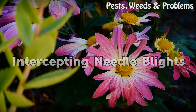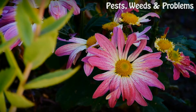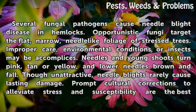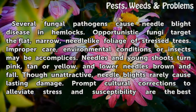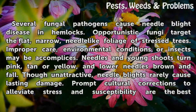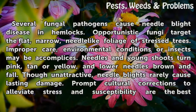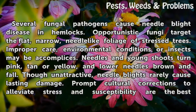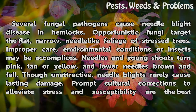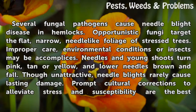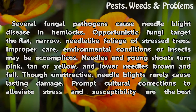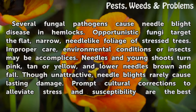Several fungal pathogens cause needle blight disease in hemlocks. Opportunistic fungi target the flat, narrow, needle-like foliage of stressed trees. Improper care, environmental conditions, or insects may be accomplices. Needles and young shoots turn pink, tan, or yellow, and lower needles brown and fall. Though unattractive, needle blights rarely cause lasting damage.